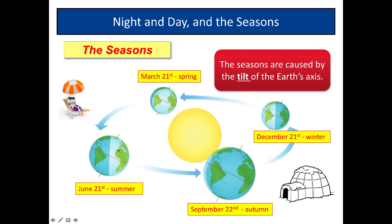Here we've got June 21st — talking about the UK. June 21st it's summer, September 22nd it's autumn, December 21st it's winter, and March 21st it's spring. When I'm recording this it's April, so we've just gone into spring in the UK.